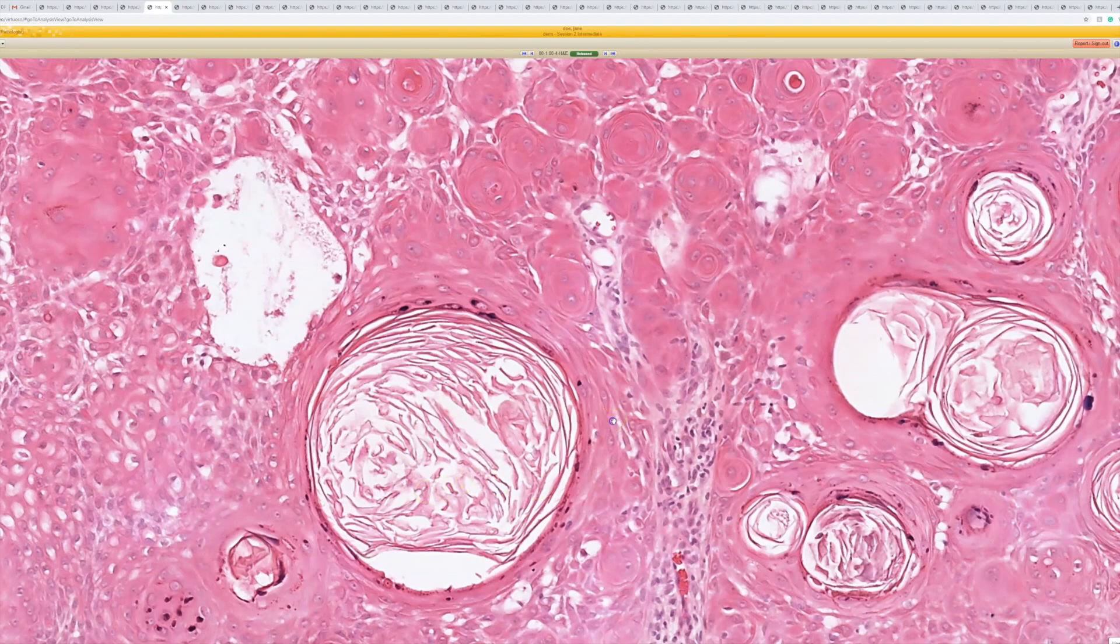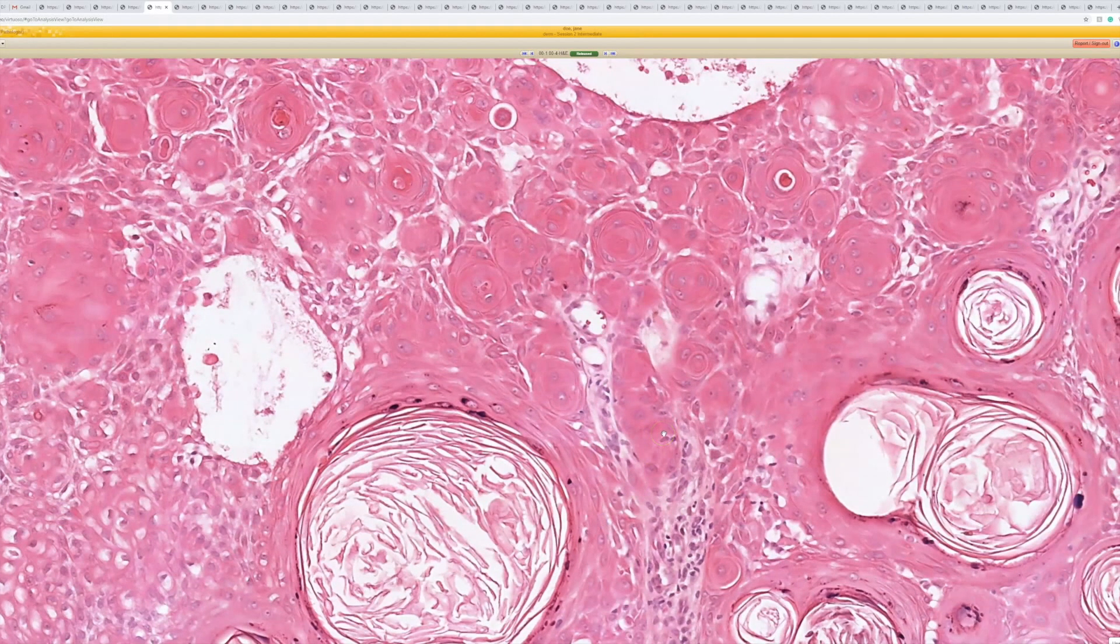Squamous eddies are also in the epidermis or within an epidermal-based lesion, and they're made of actual viable living keratinocytes that are swirled and whirled together into a little glassy nodule.